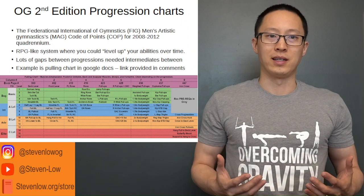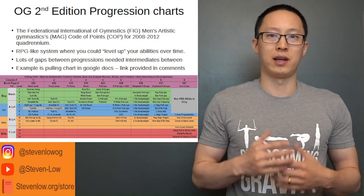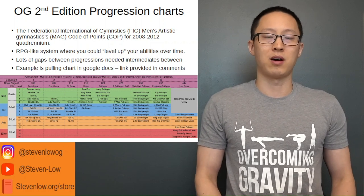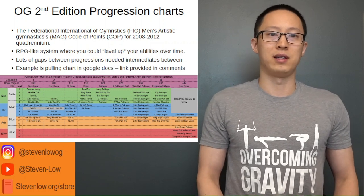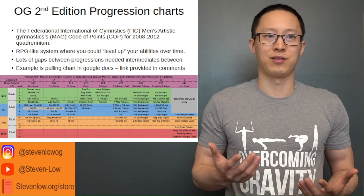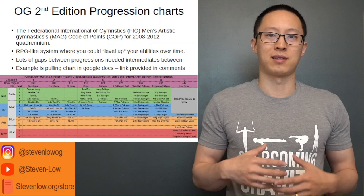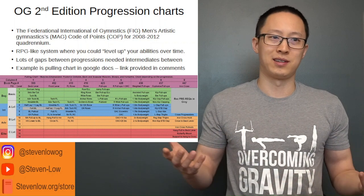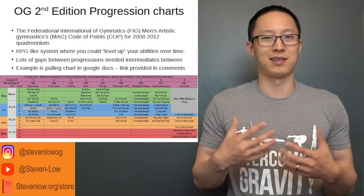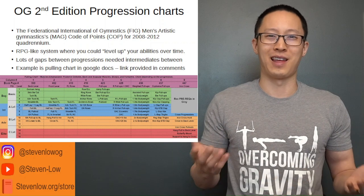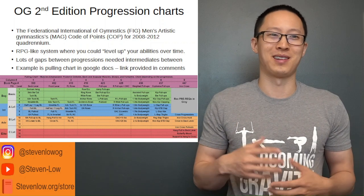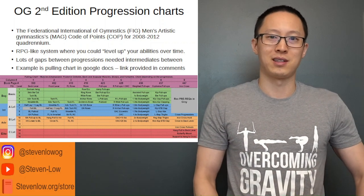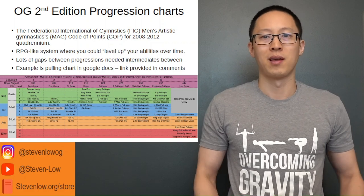The progression charts in Overcoming Gravity were mainly based off of the Fédération Internationale de Gymnastique — in short, FIG — Men's Artistic Gymnastics, in short MAG, and the Code of Points, the COP, for the 2008 to 2012 quadrennium.